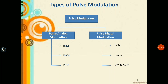These are the types of pulse modulation. Pulse modulation can be of two categories: pulse analog modulation and pulse digital modulation. Pulse analog modulation can be classified into three categories: PAM (pulse amplitude modulation), PWM (pulse width modulation), and PPM (pulse position modulation). Pulse digital modulation is again categorized into three: PCM (pulse code modulation), DPCM (differential pulse code modulation), and DM/ADM (delta modulation and adaptive delta modulation).